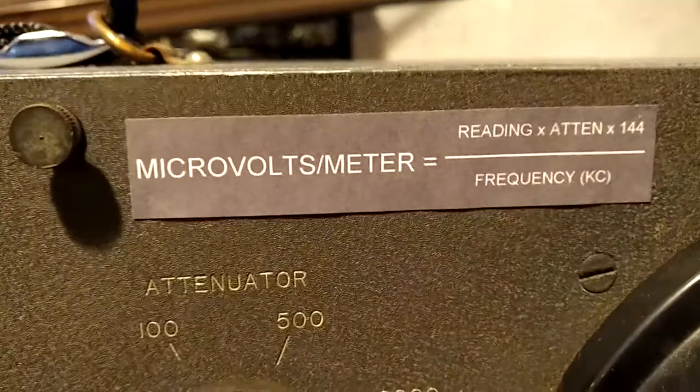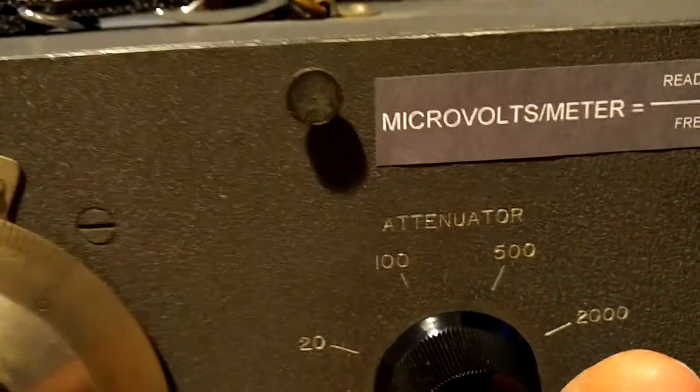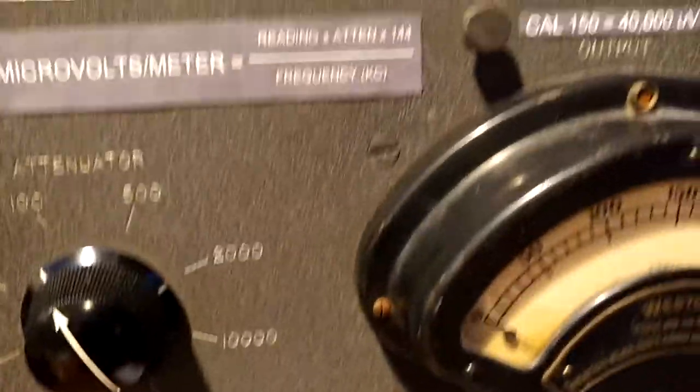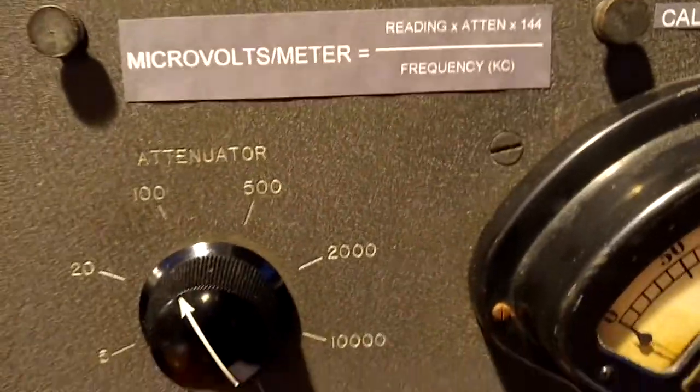So, that's how you get this formula, that the microvolts per meter is the reading on the meter, times the attenuation that you happen to use on the signal you're receiving, to get it in mid-scale, divided by, times 144, divided by the frequency in kilohertz.